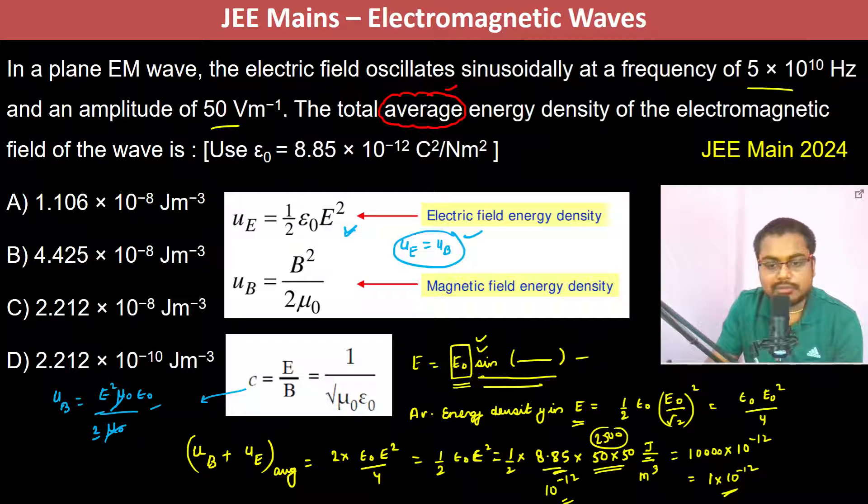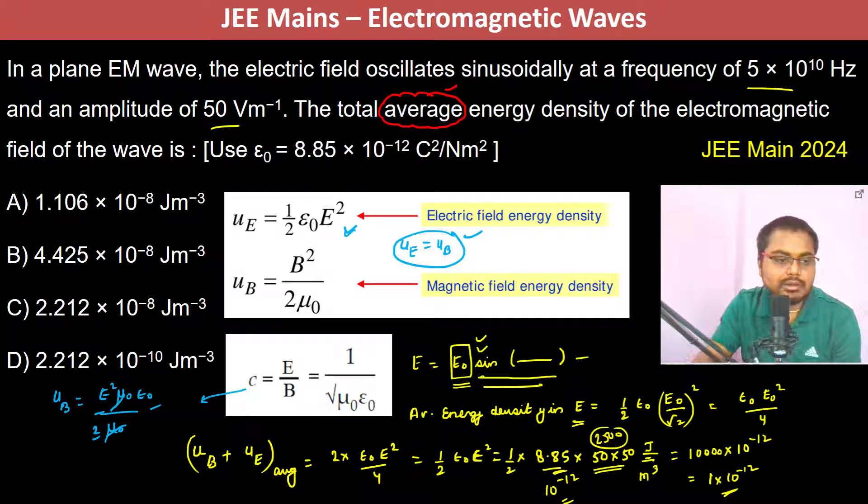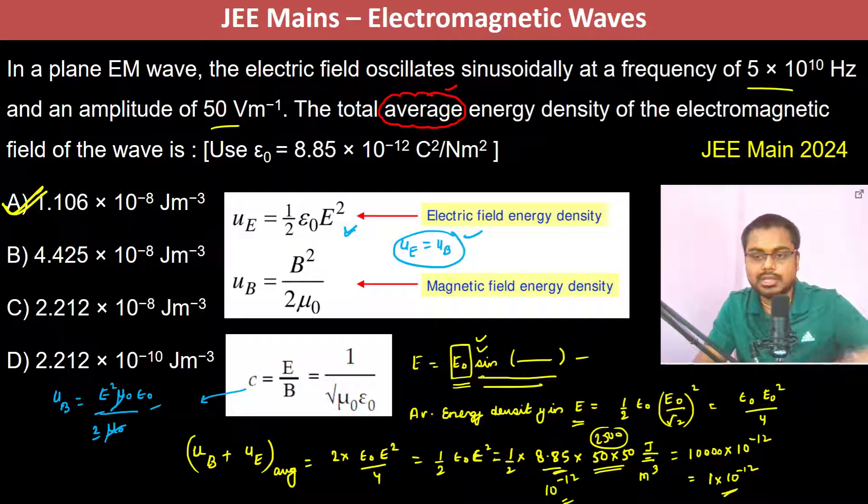Now since this 0.85 is also there, so therefore it's going to be a little ahead of it. So therefore A is going to be the answer.